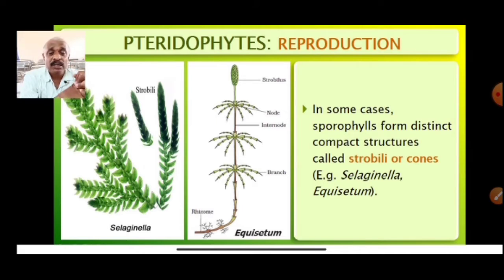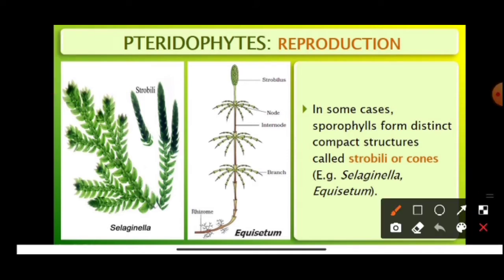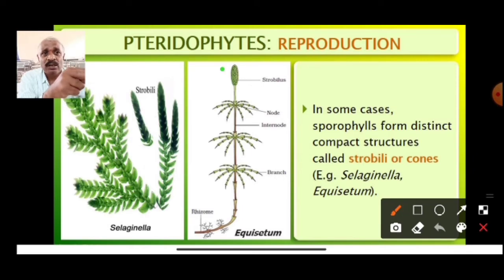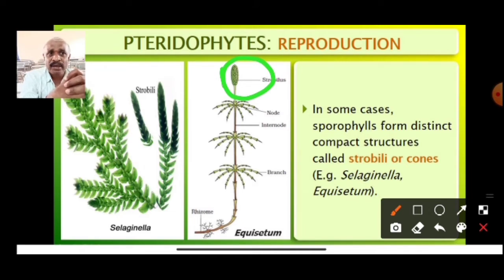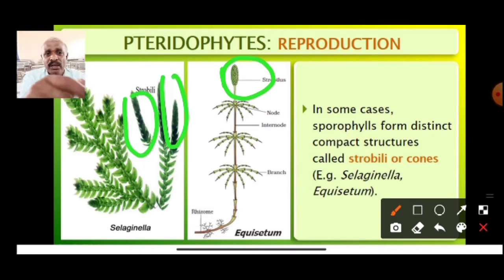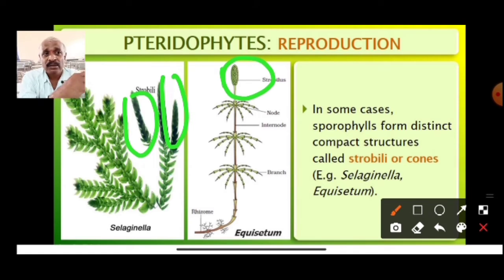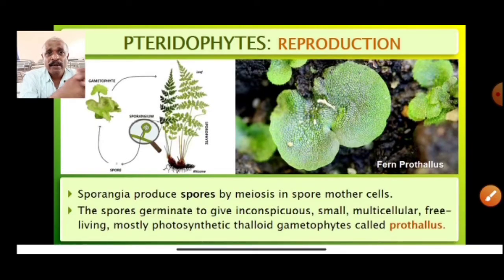In some cases sporophylls form distinct compact structures. In some examples the sporophylls combine to make a very distinct structure, which we call strobili, or cones. You find this in Selaginella and even in Equisetum, where a compact body is formed.